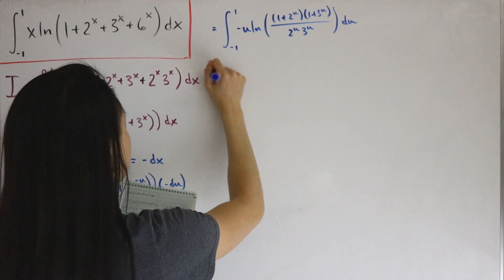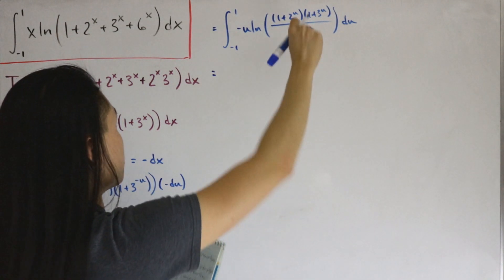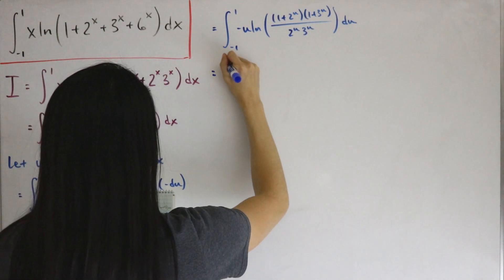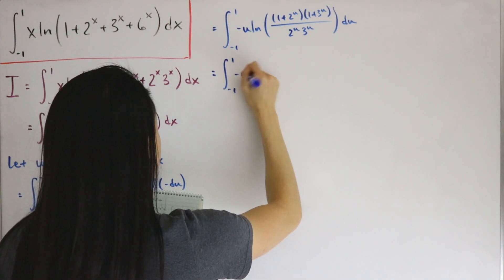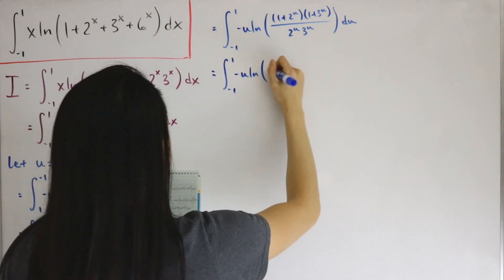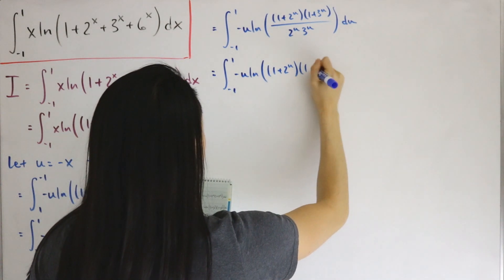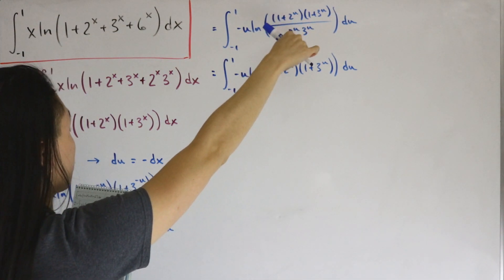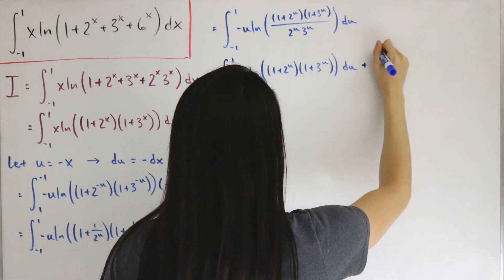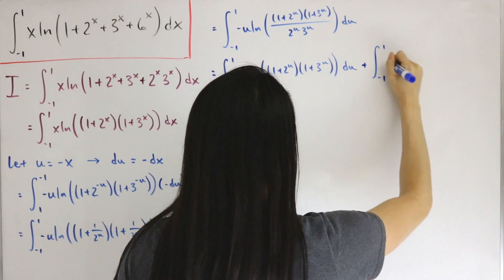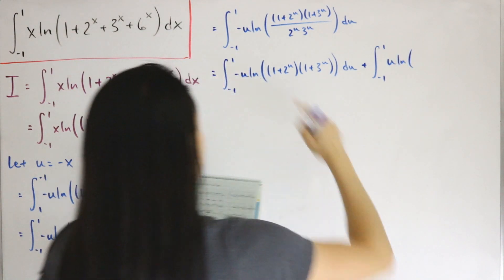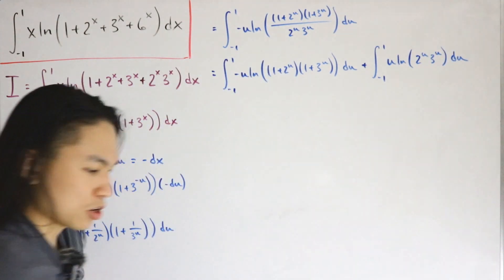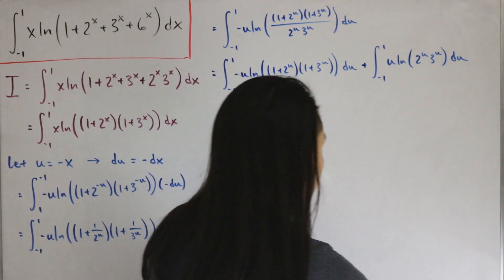Using the property ln(a/b) = ln(a) - ln(b), we split the integral into two parts: the integral from -1 to 1 of -u · ln[(1 + 2^u)(1 + 3^u)] du, minus the integral from -1 to 1 of u · ln(2^u · 3^u) du. The negative sign from the division flips to a plus when factored out.